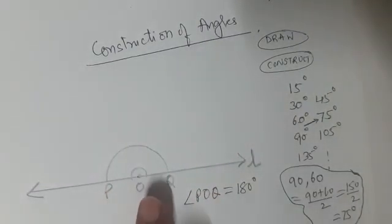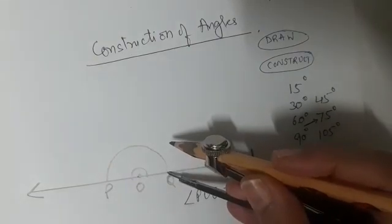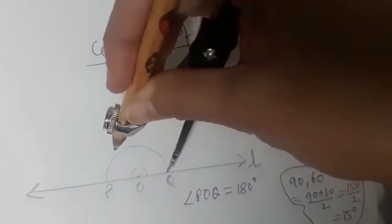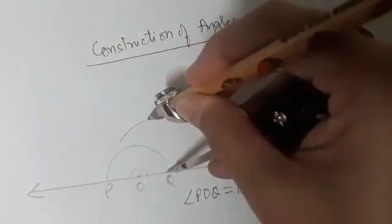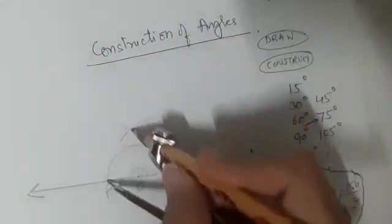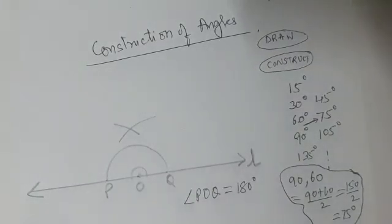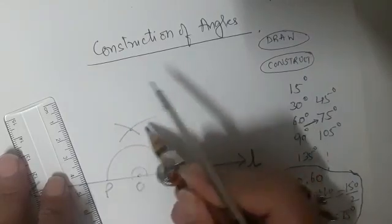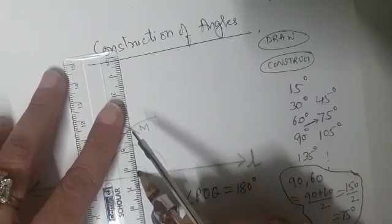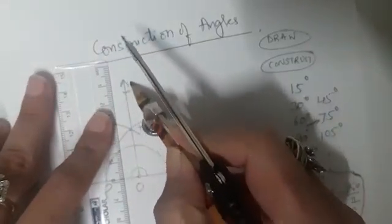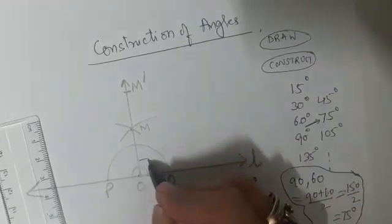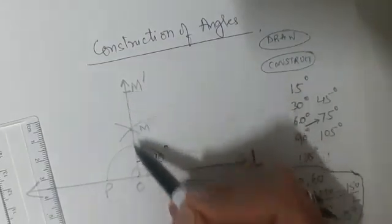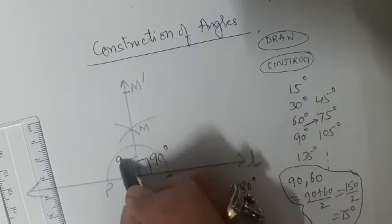To bisect angle POQ, with Q as center open the compass to a radius more than half of PQ and draw an arc. Similarly with P as center and the same radius draw another arc. Let the point of intersection be M. Join OM and extend it to form ray OM'. Then angle M'OQ will be 90°.